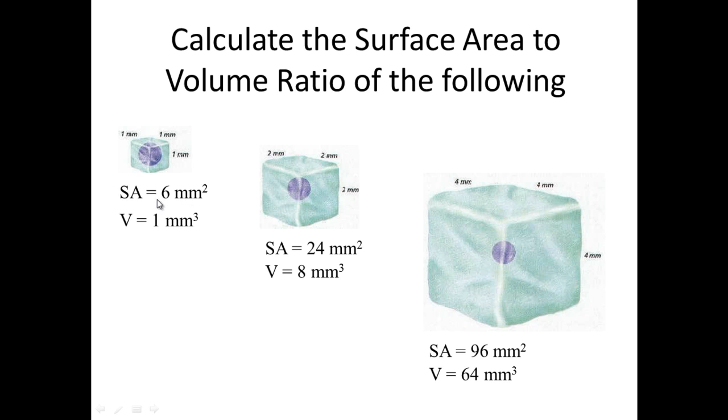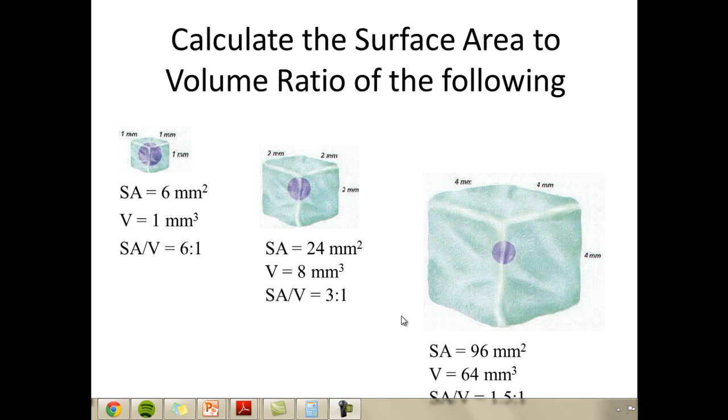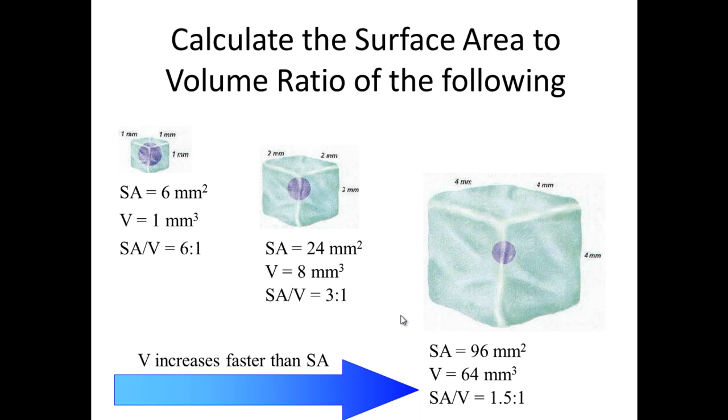Now because it's a ratio, you're just basically going to divide the surface area by the volume and that gives you a ratio of 6 to 1. The medium one is 3 to 1 and the largest one is 1.5 to 1. So what this is showing is that the volume is actually increasing faster than the surface area.